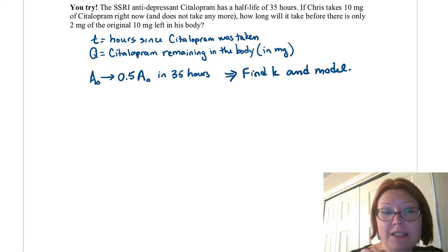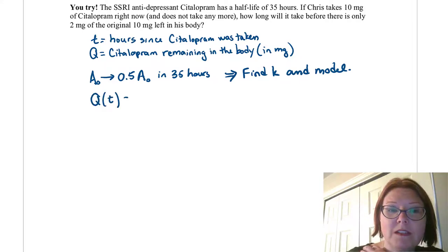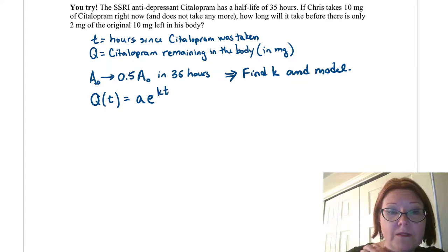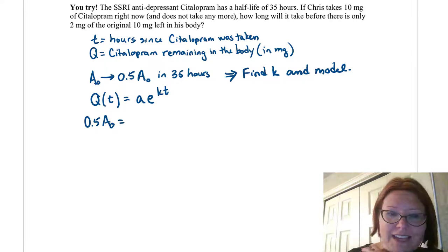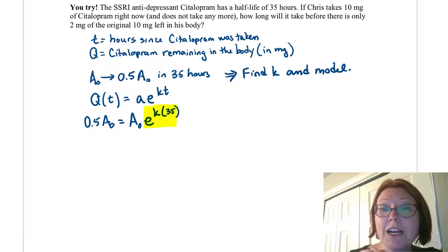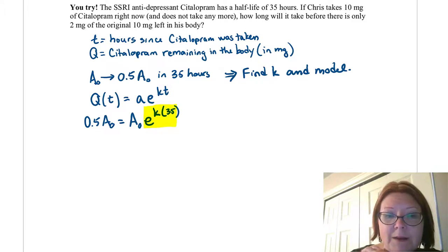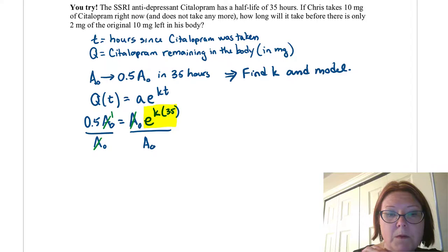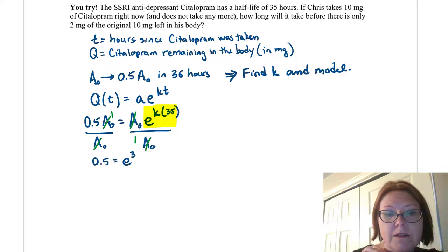This is enough information to find the k value and the model. Starting with our continuous exponential decay model: Q of t equals lowercase a times e to the kt. Here Q of t is 0.5 capital A sub-zero, lowercase a is capital A sub-zero, and t is 35. We want to isolate the exponential part, e to the k times 35, so let's divide both sides by capital A sub-zero. The A sub-zeros reduce on both sides, leaving 0.5 equals e to the 35k.